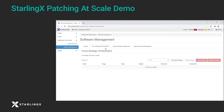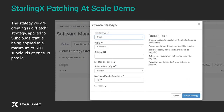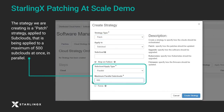Click 'Create Strategy' to open the dialog box. The strategy we are creating is a patch strategy applied to subclouds in parallel, to a maximum of 500 subclouds at a time.